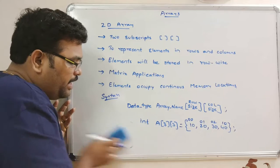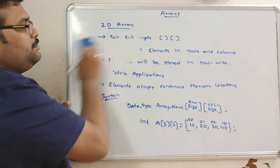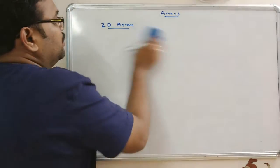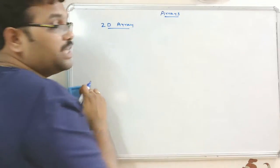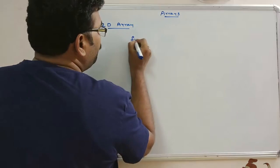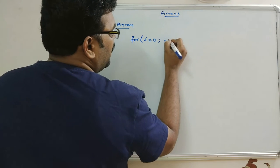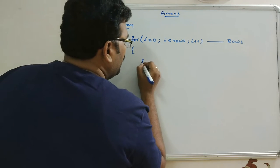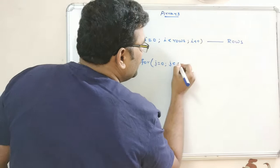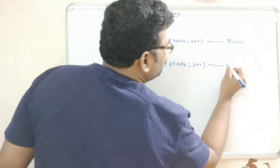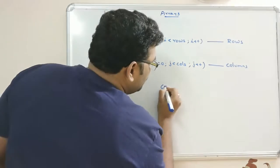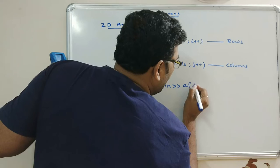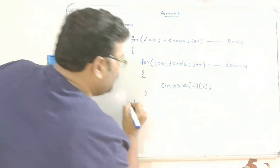This is initialization at compile time. For runtime initialization, we use iterative statements — nested for loops. The outer loop represents rows: for i = 0; i < rows; i++. The inner loop represents columns: for j = 0; j < columns; j++. Inside, cin >> a[i][j] reads each element.